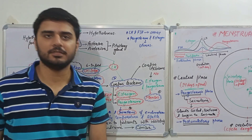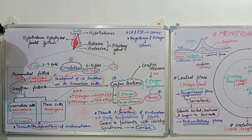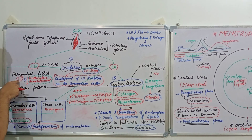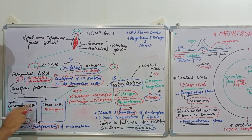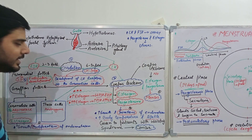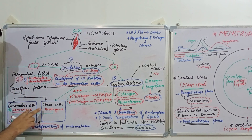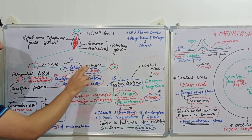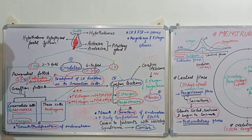The primordial follicle is converted into primary follicle, then into secondary follicle, and then into Graafian follicle. The secondary follicle and Graafian follicle states have two types of cells: granulosa cells and theca cells. These are two covering cells, and they have surface receptors for two different hormones — one for luteinizing hormone and one for follicle-stimulating hormone.